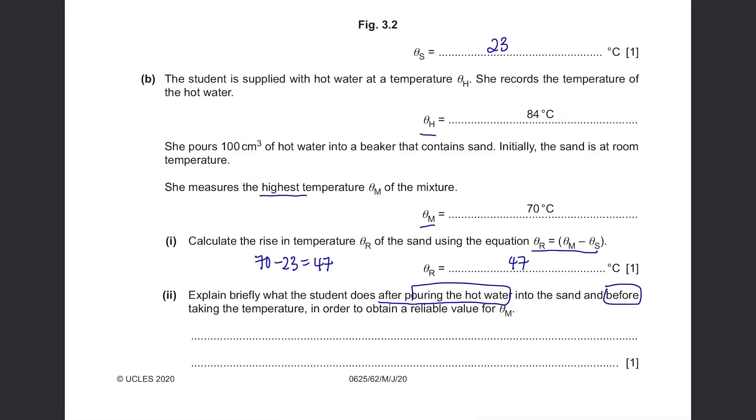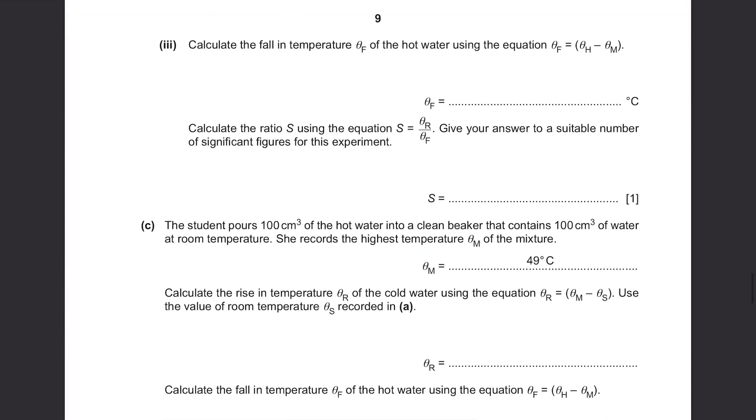Explain briefly what the student does after pouring the hot water into the sand and before taking the temperature in order to obtain a reliable value for theta-m. This is a funny question to me. Well, you gotta stir it so that the temperature is the same throughout the mixture. Calculate the fall in temperature theta-f of the hot water using the equation theta-f equals theta-h minus theta-m. Theta-h was 84 and theta-m was 70, so it's 14.